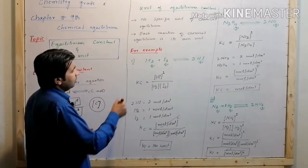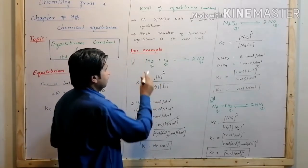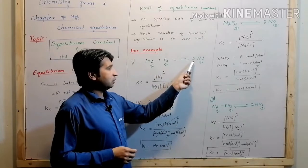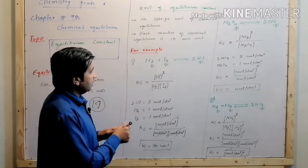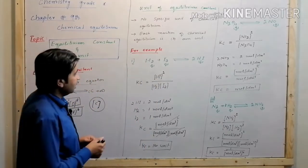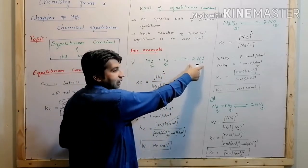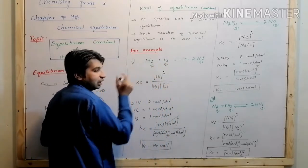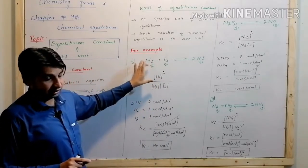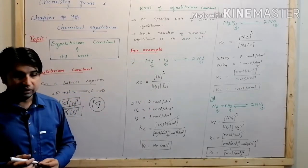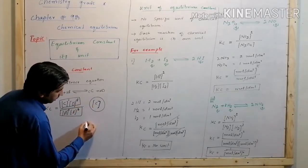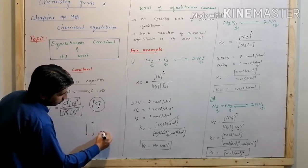Let's start with an example. For example, H2 hydrogen reacts with I2 using 2 moles of hydrogen — this is a balanced reaction. The equilibrium constant Kc equals the concentration of products divided by the concentration of reactants. Let's look at the concentration units.